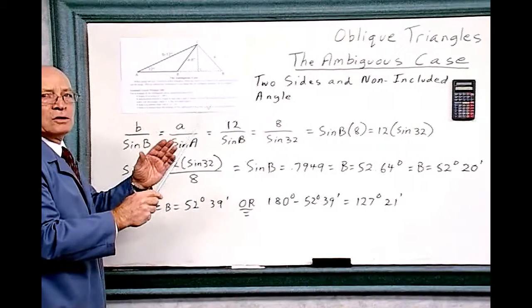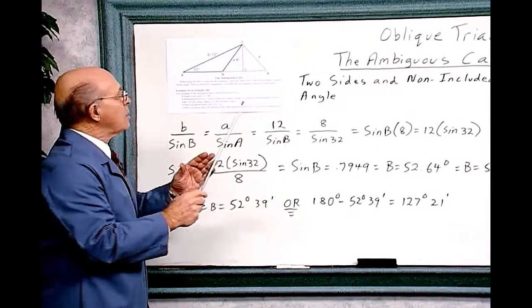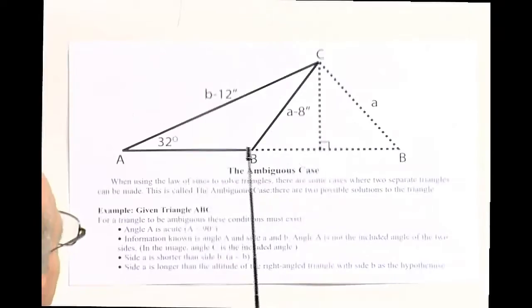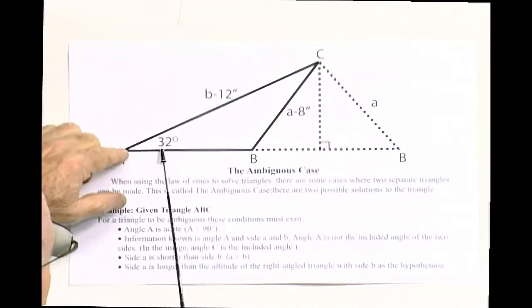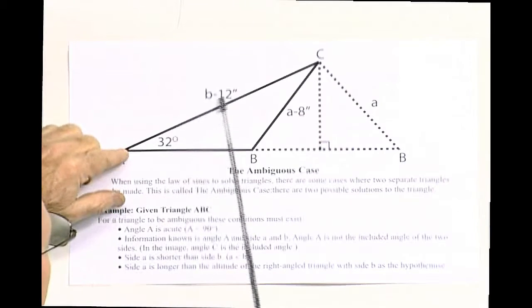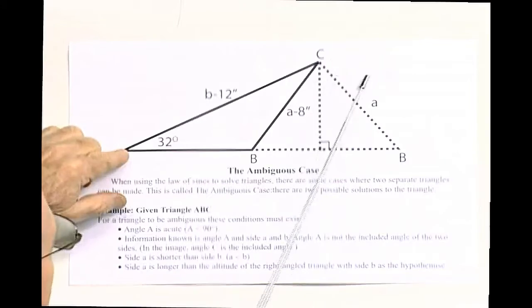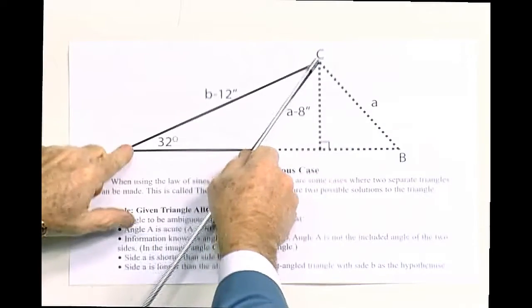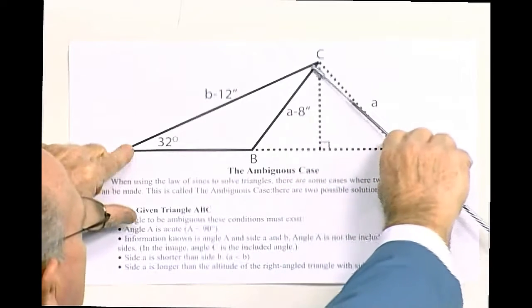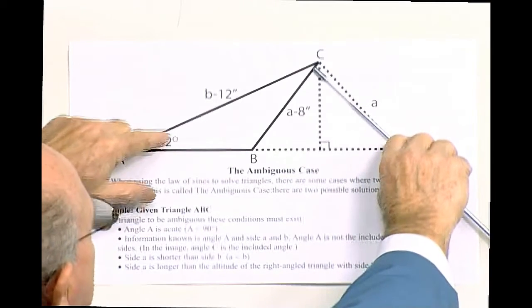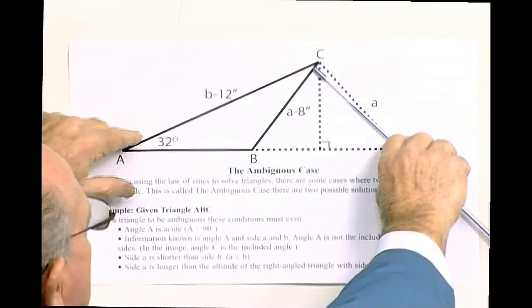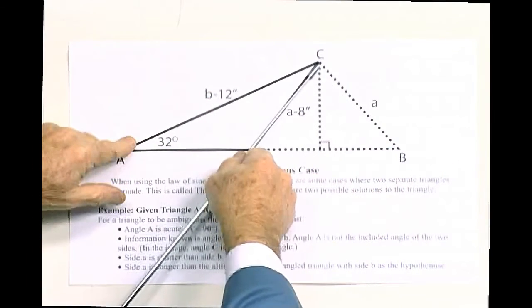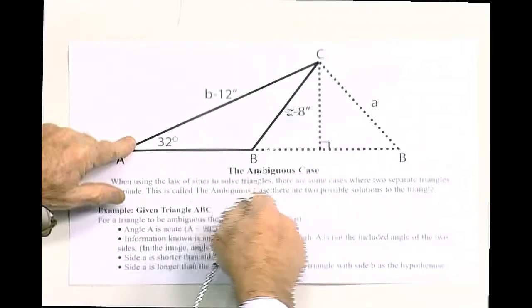Now notice this diagram carefully. You have A over here with this angle being 32 degrees - this stays the same. B, 12 inches, stays the same. Now this A over here, you can swing it over here and it's still true. It's still 32 degrees and B equals 12. So you have two possibilities here with A equals 8.